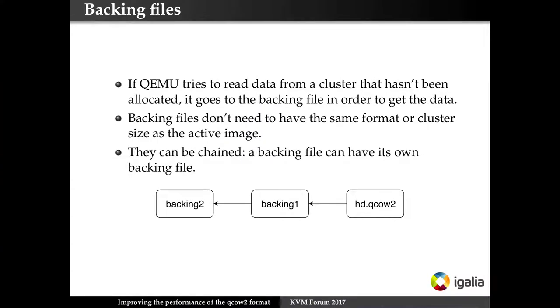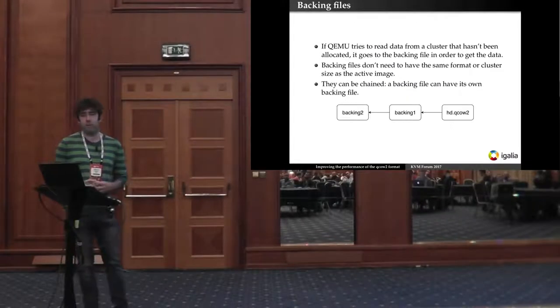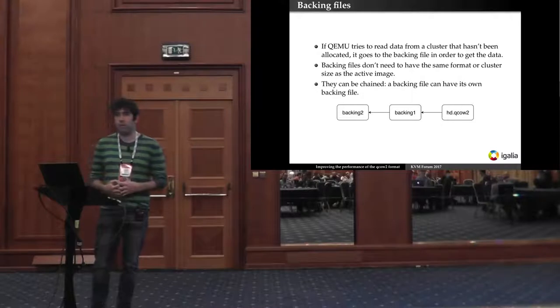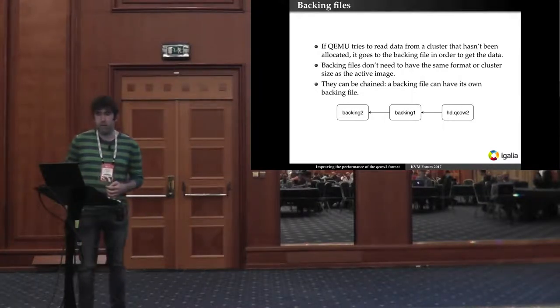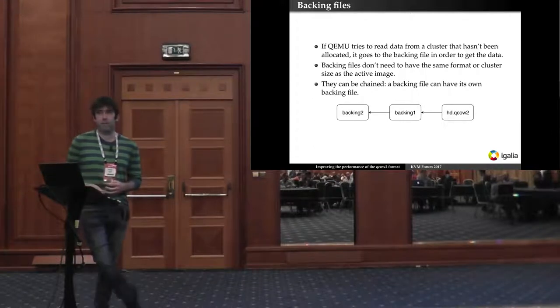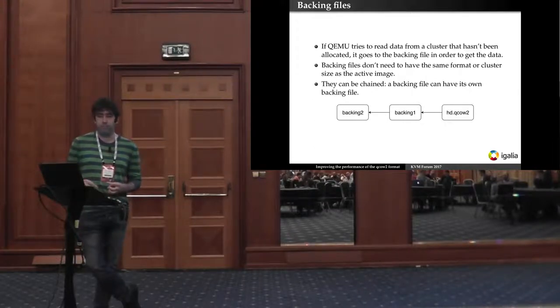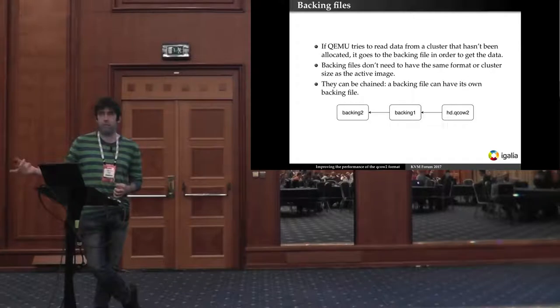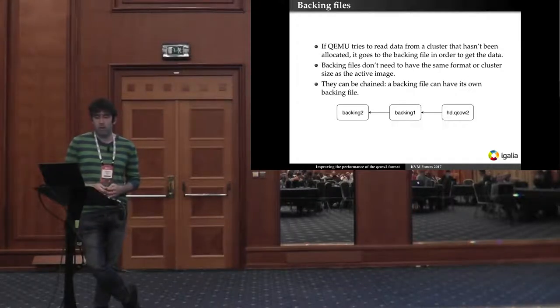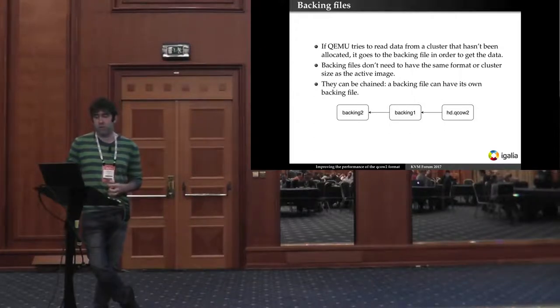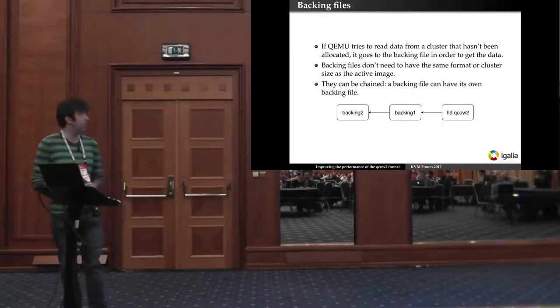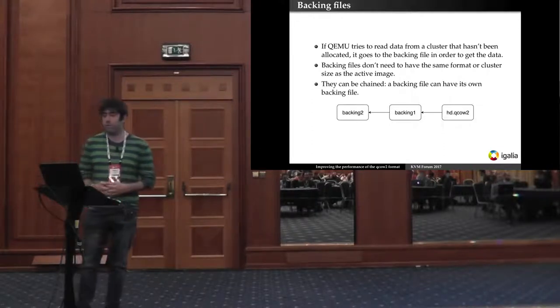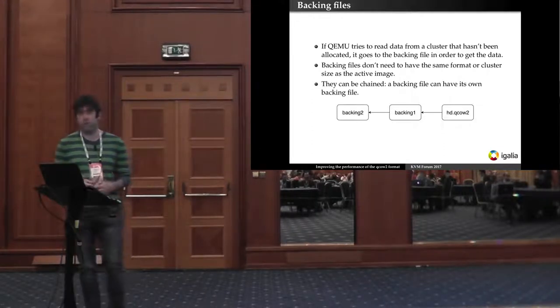In addition to that the QCOW2 format also supports backing files. That means that when the guest tries to read data from a part of the disk if that data hasn't been allocated in a particular QCOW2 file then you will go to the backing file and try to see if the data is there. Backing files can be chained or each backing file can have one backing file and so on and so forth. And it's also important to note that backing files don't need to have the same format or cluster size as the original image.